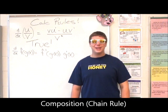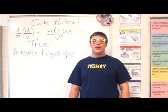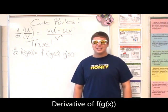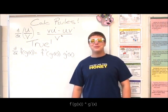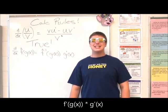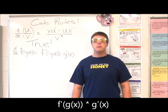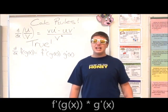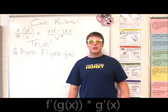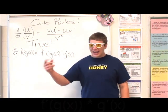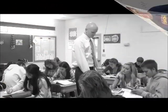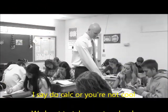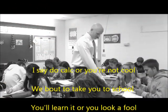We did what they said we wouldn't accomplish. They said we couldn't derive f of g of x — it is time to start looking. Chain rule: f prime of g of x times g prime of x. Left hand on that calculator, right hand on that pencil.